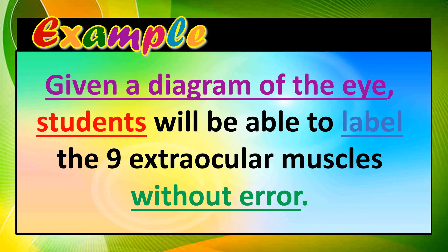'Students' — this is the audience. 'Will be able to label the nine extra-ocular muscles' — the word 'label' is highlighted, and this is the behavior. 'Without error' is our degree. So this is the proper way of writing our objectives.